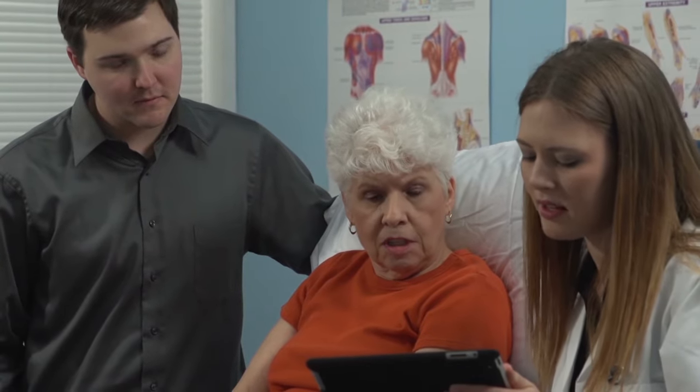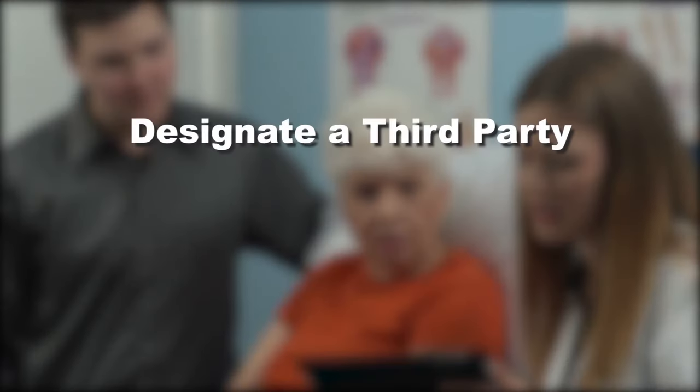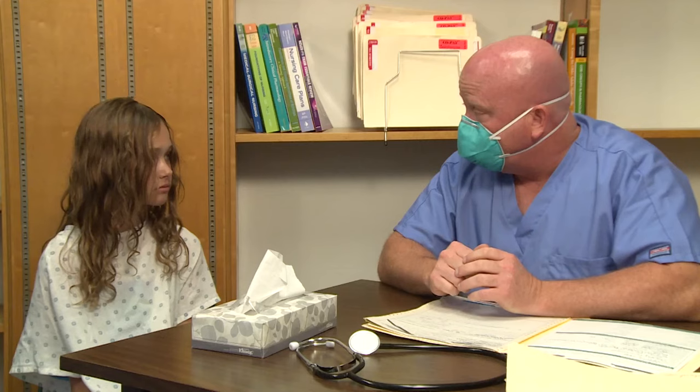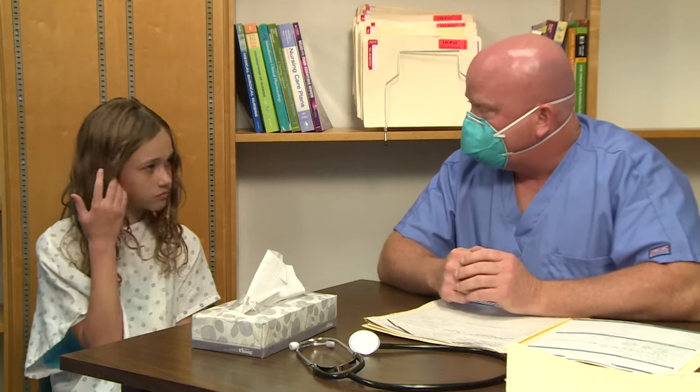A patient also has a right to designate a third party to receive their ePHI, and request an accounting of PHI disclosures made by a covered entity for up to six years prior to the request. If for any reason the patient is incapable of exercising their rights — for example, if they are small children or mentally handicapped — a representative can be chosen to exercise these rights on their behalf.